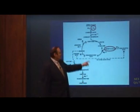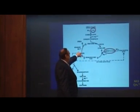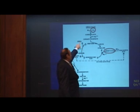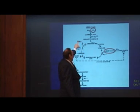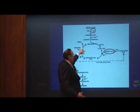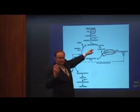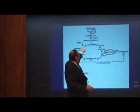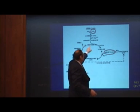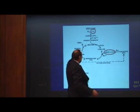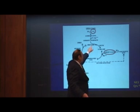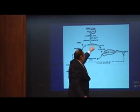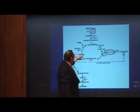This ultimately produces arginine, which then under the influence of the arginase enzyme becomes urea. Urea dumps off into the urine, carries water with it, and makes our urine by creating a hyperosmotic situation that pulls water into the tubules. Then it gives off ornithine, which combines again with carbamyl phosphate, and the cycle goes round and round.